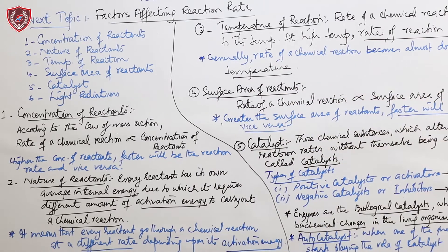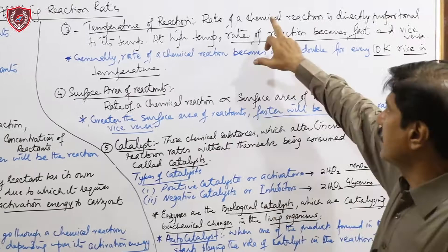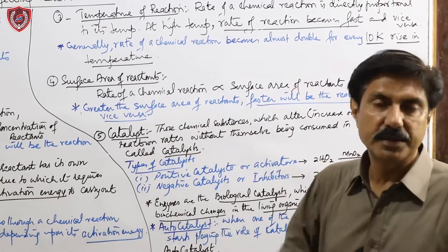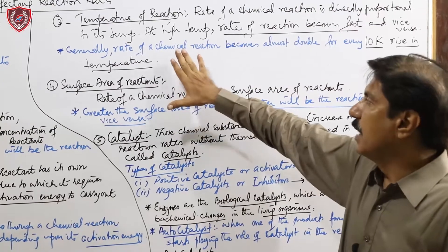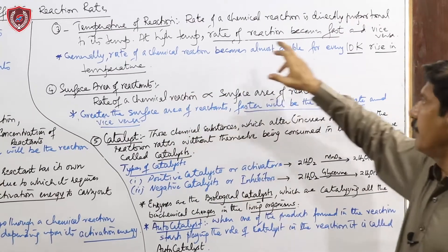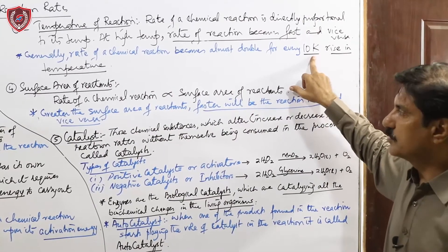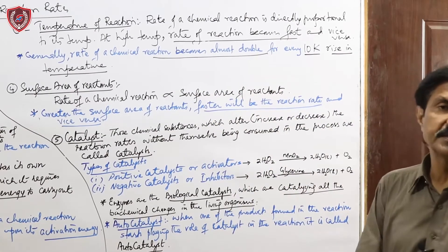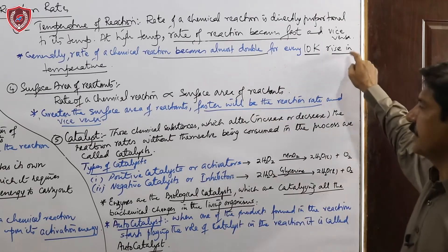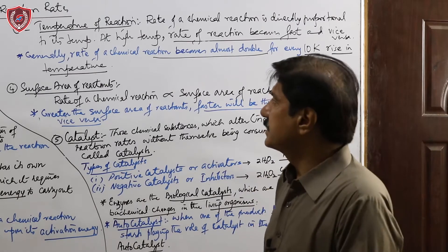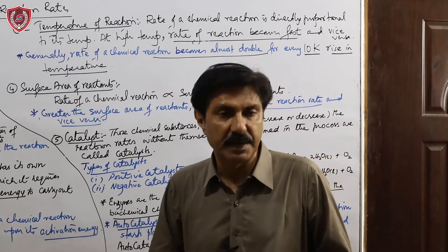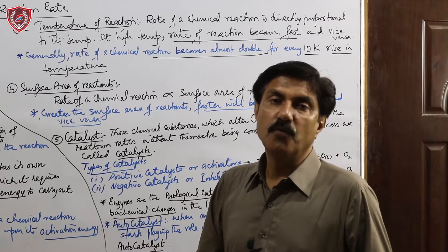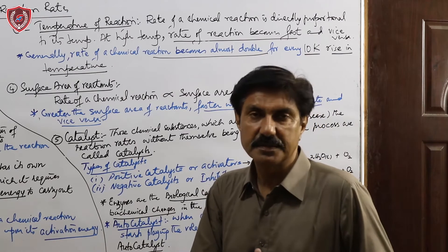The third and very important factor is temperature. Temperature directly affects the rate of reaction: at high temperature, rate of reaction is high; at low temperature, rate of reaction is low. Generally, for any chemical reaction, if you increase temperature by 10 Kelvin, the rate of reaction almost doubles compared to before. The rate of a chemical reaction almost becomes double for every 10 K rise in temperature.